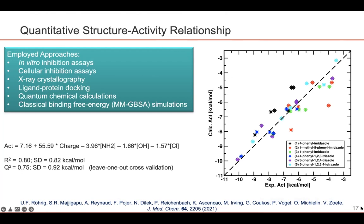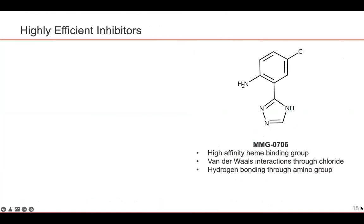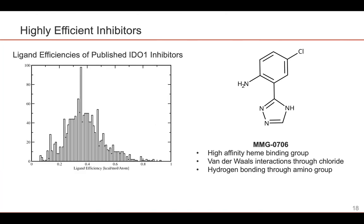I would just show one example in this slide. This is one of these highly efficient inhibitors, MMG0706, which has a high-affinity heme binding group, this 1,2,4-tetrazole. It makes favorable van der Waals interactions with the protein through its chloro substituent, and it is able to make both intermolecular and intramolecular hydrogen bonds through its amino group. When we compare the efficiency of this compound to all published IDO1 inhibitors, we see that we're really among the very best and most efficient compounds.